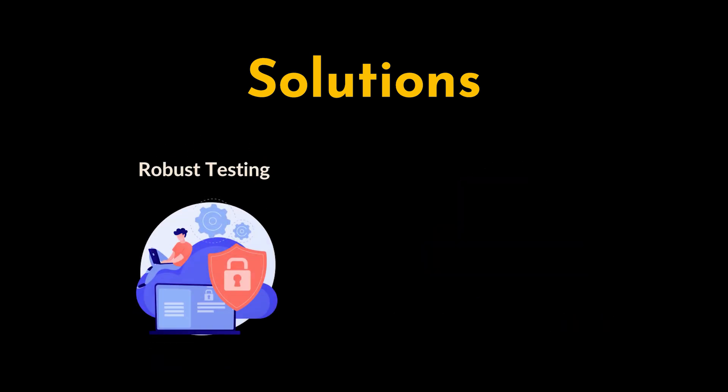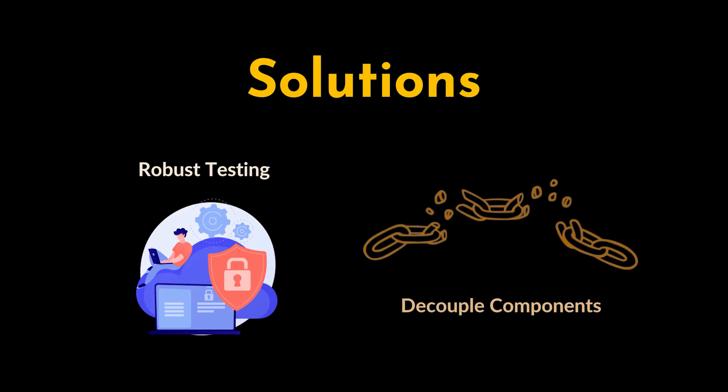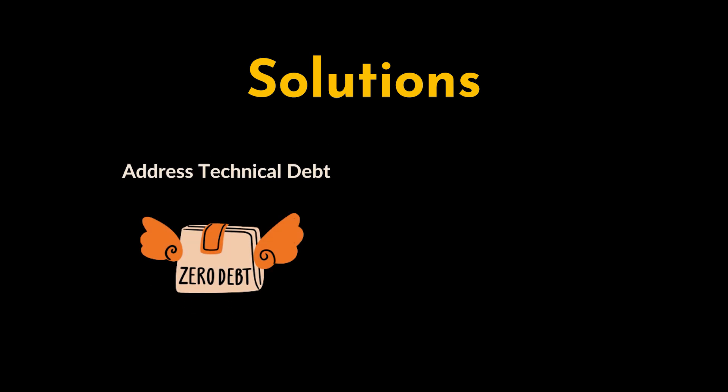We can also implement robust testing by developing a suite of unit tests, integration tests, and end-to-end tests to cover critical paths and functionalities. Tests can help catch regressions and ensure the stability of the code base. Another solution is to reduce coupling by decoupling components to make the system more modular — this can involve defining clear interfaces and using design patterns that promote loose coupling.